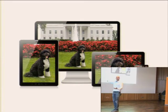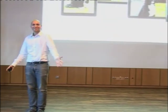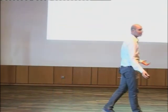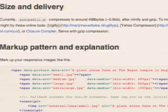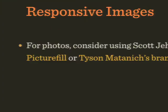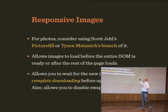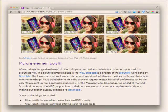What we want is to deliver different images to different devices. We can't do that yet with a magic trick. The only thing we can do is use picture fill, which most of you probably use already, to make sure we don't deliver assets users don't need. The markup is a bit messy but it works. Or we can use Tyson Matanick's branch for more granular control about when images load — before or after the entire DOM has loaded.